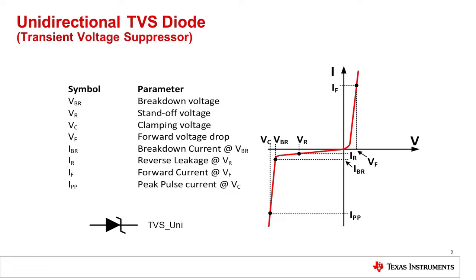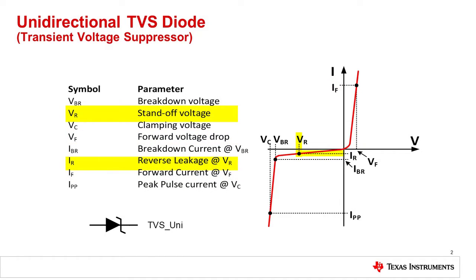One of the most common devices used to protect circuits from EOS damage is the TVS diode. A TVS diode is similar to a Zener diode, but is designed for fast turn-on and large transient power dissipation. On the right side of the curve, the forward voltage VF is defined at the forward current IF. On the left side of the curve, the reverse standoff voltage VR is shown with its associated reverse leakage current IR. The reverse standoff voltage is the maximum voltage which can be applied across the TVS diode to maintain a low leakage current. This is the off state for the TVS diode.